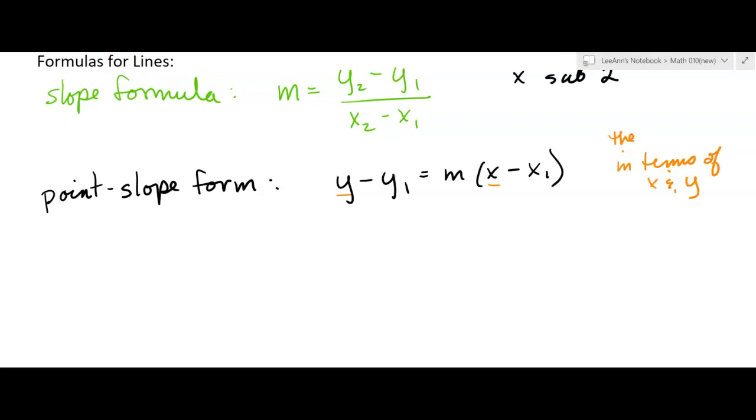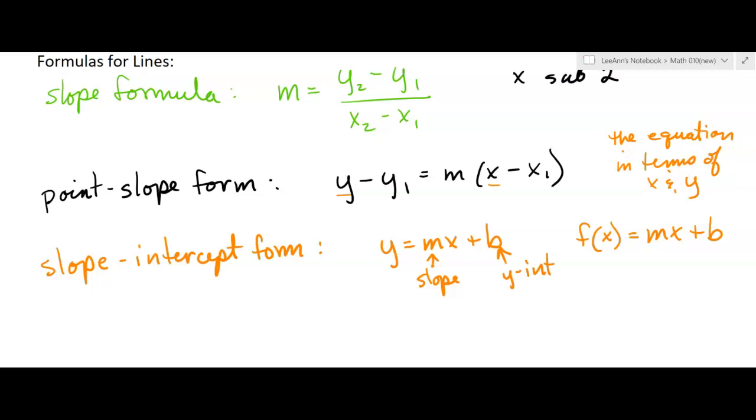Then we have the slope-intercept form—they usually call it the slope-intercept form, but it's actually the y-intercept. We know we have or could have more than one intercept, and that says y equals mx plus b. So all linear functions can be written in that form. You could also write it as a linear function, and that tells you what the slope is and the y-intercept.